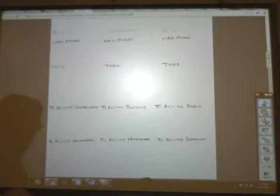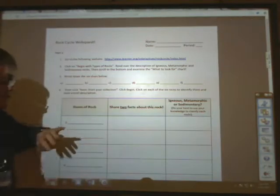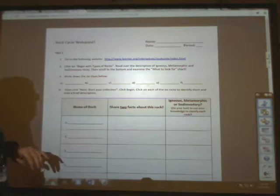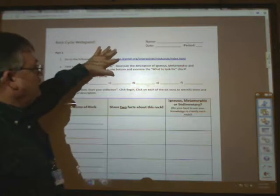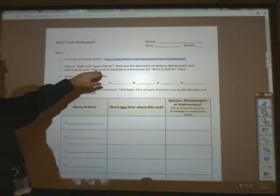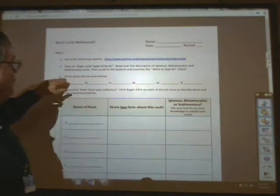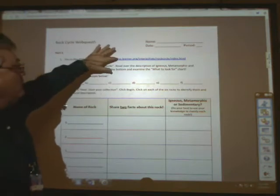On your second activity, we're going to go back up here to the lesson. This is for Friday. On Friday, you're going to be completing the Rock Cycle WebQuest. So all you have to do is click on it, and it takes you directly to the WebQuest. On the WebQuest, you will receive a paper copy from your substitute. And on this, it says on the following, go to the following website. So all you have to do is control-click on this website. It says begin types of rock. Read over the descriptions of igneous, metamorphic, and sedimentary. Then scroll to the bottom and examine what to look for chart. Write down the six clues. So I'm going to show this one to you.